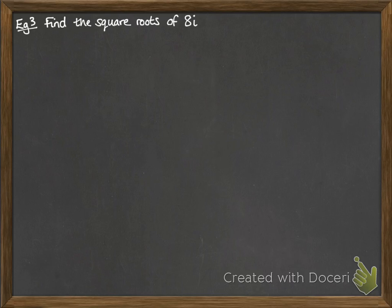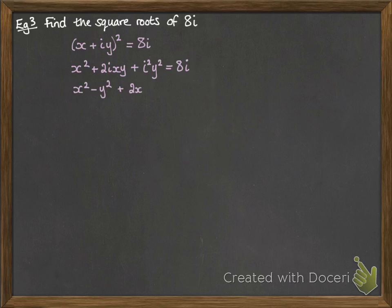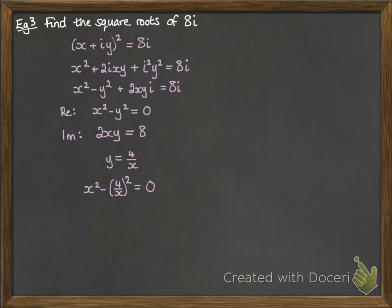Find the square roots of 8i. So there is some complex number where if you square it, you get 8i. We multiply out that bracket, set it equal to 8i, just tidy it up a little bit, and then we can equate the real and the imaginary parts. Then rearrange that imaginary part into y equals 4 over x. Substitute it into the equation we got from the real parts, and then finish that off. So x to the 4 would be 16, so x is plus or minus 2.